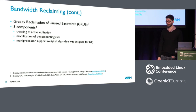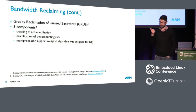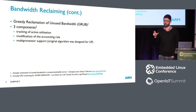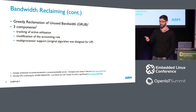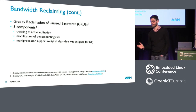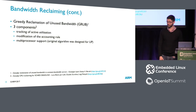The algorithm we implement is called GRUB — Greedy Reclamation of Unused Bandwidth. The basic idea is: when I admit some tasks to the system and have a fraction of CPU time spare — nobody's using that time — the task that is currently running will greedily use the portion of bandwidth not currently used by the others. That makes the implementation very simple — it's really a minor modification. It's composed of three main components: tracking the utilization of active tasks, modifying the accounting rule, and handling multiprocessor extension issues.